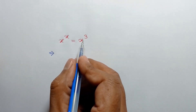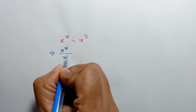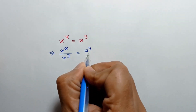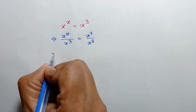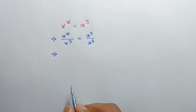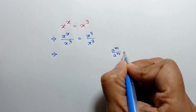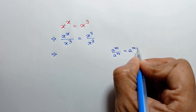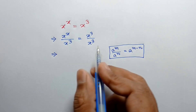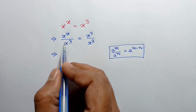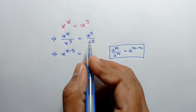Dividing both sides by x cube, we can write x to the power x over x cube is equal to x cube over x cube. According to the law of exponents, a to the power m over a to the power n is equal to a to the power m minus n. So we can write x to the power x minus 3 is equal to 1.